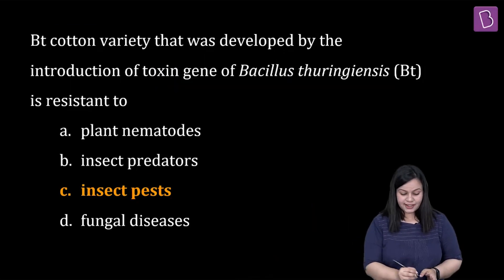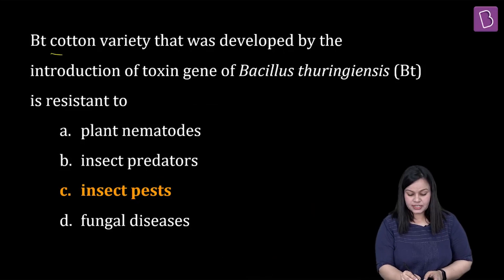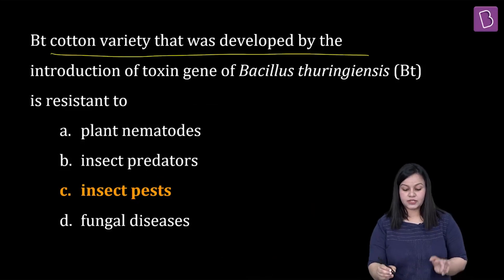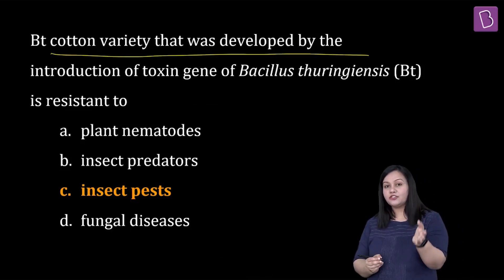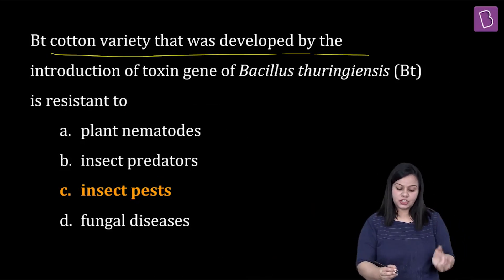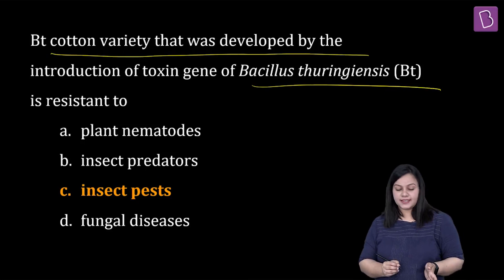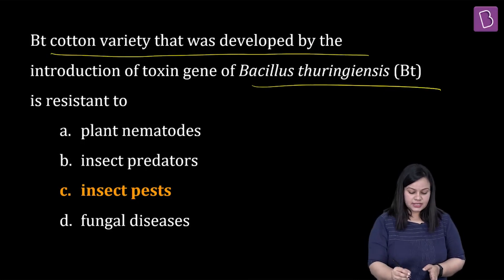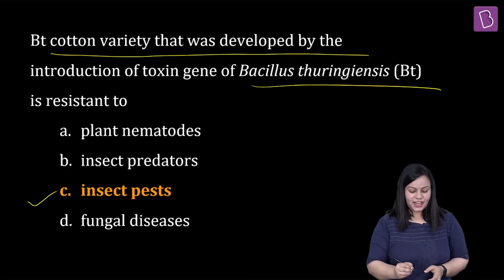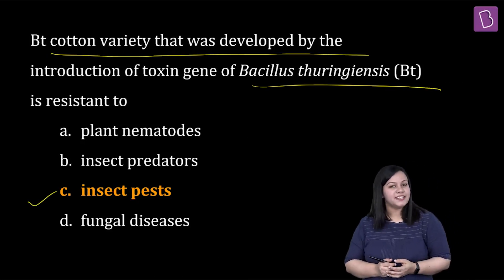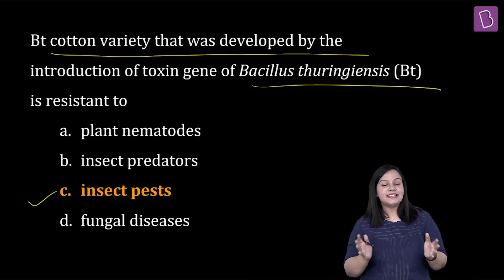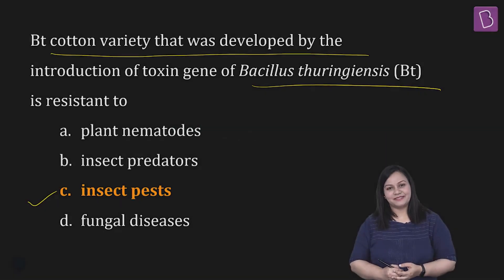So is question ka right answer kya hua? Bt cotton variety that was developed by the introduction of toxin gene of Bacillus thuringiensis is resistant to — the answer would be option C — insect pests.